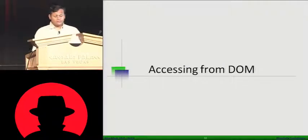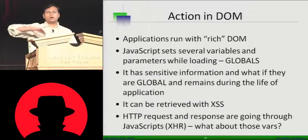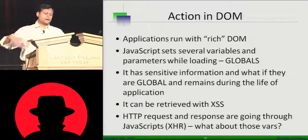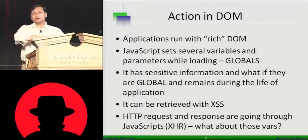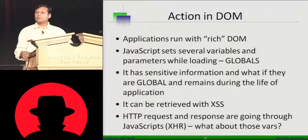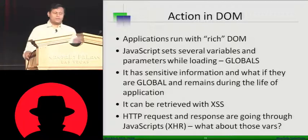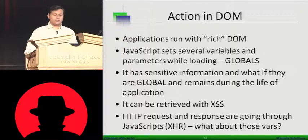The second interesting vector is accessing information from the DOM. An application runs with a rich DOM — when you load it, it loads a lot of different global variables. These global variables are available throughout the application. You can start accessing these global variables depending on where your XSS call is going. You can extract globals that contain sensitive information like usernames, passwords, session IDs, UIDs, etc. These can be retrieved with XSS, and HTTP request-response and XHR calls can be stolen as well.